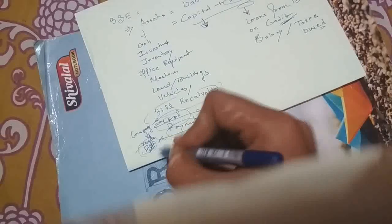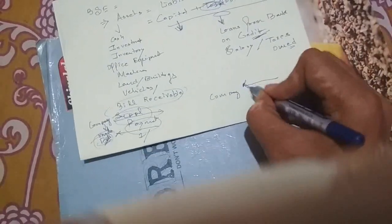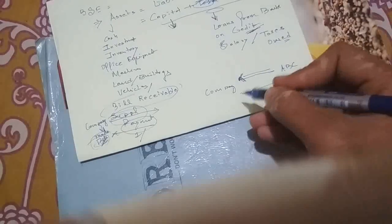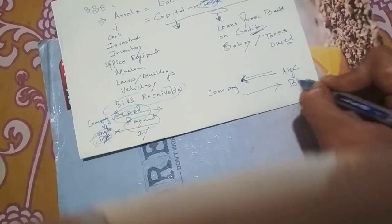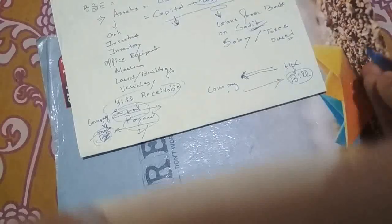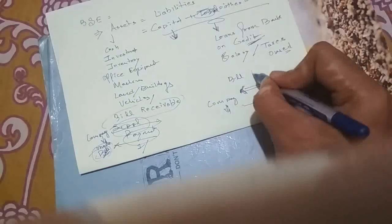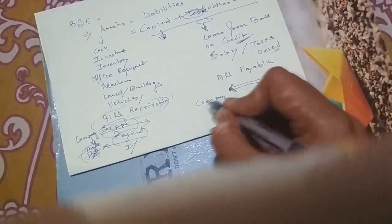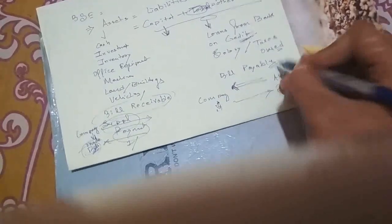Bills receivable means the payment has not been done at the time of supply, so in future you will receive the money. Bills payable: you as a company purchase goods or raw materials from another company — say ABC — and you will make payment after one or two months. ABC produces the bill in your company's name and your company pays it later. This is bills payable, and it sits on the liability side because your company owes this money to ABC.